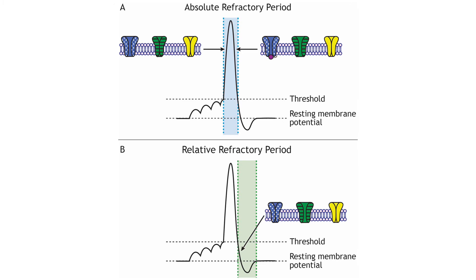Each neuron does have a maximum firing rate, and even if the stimulus continues to increase in strength, the neuron cannot fire at a higher frequency. The maximum firing rate of a cell is determined by the status of the ion channels in the neuronal membrane during the different phases of the action potential. During the absolute refractory period, a second action potential cannot be fired under any circumstances regardless of the strength of the stimulus. The voltage-gated sodium channels are either open during the rising phase or inactivated during the falling phase. When the cell repolarizes and the voltage-gated sodium channels de-inactivate and return to a closed state, the cell is again able to fire another action potential.